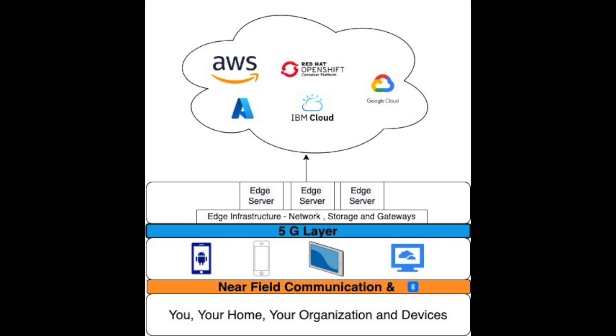Because of all five of these capabilities, edge computing is much more powerful with 5G technology. Here is how a simple edge architecture looks: at the bottom-most layer, you have your data, your devices, and your communication devices. These connect to your internet-connected devices — for example, your iPhone, Android phone, tablet, notebook, or MacBook.